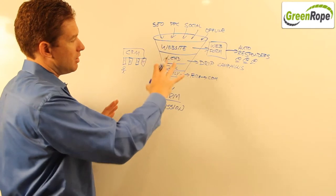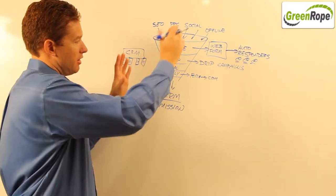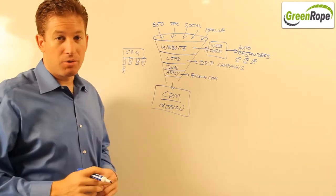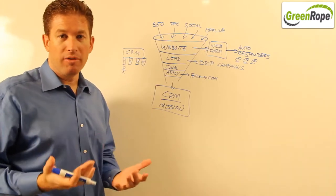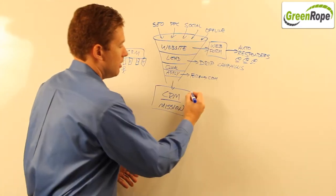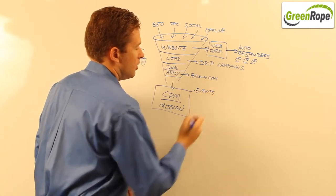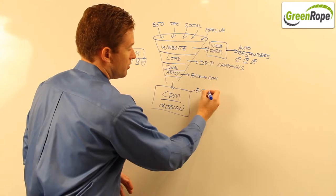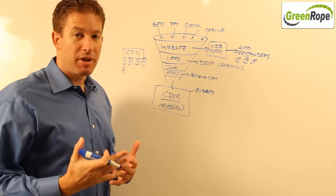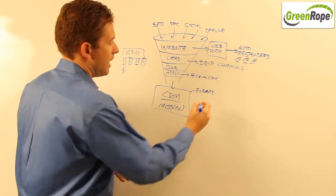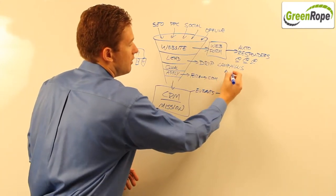So this is all how this works on the funnel process once somebody gets in here. We also have a lot of other tools that you can use to help you become more effective. There may be that you run events. With events, we have the ability for you to, say, maybe a prospect attended an event or attended a webinar or whatever the case, you can have that feed into the drip campaign.